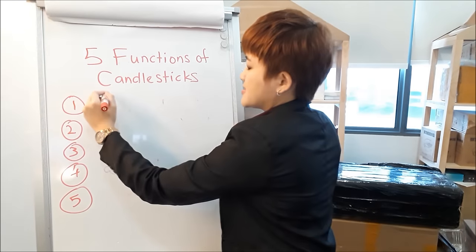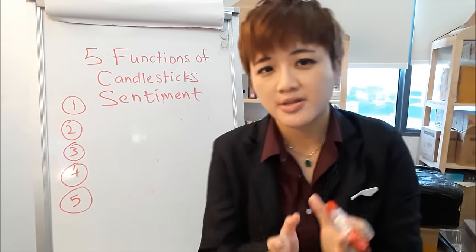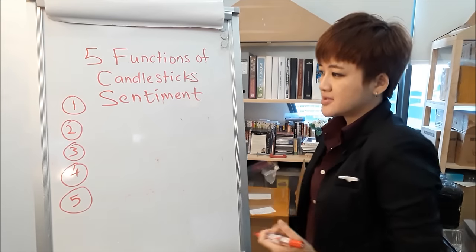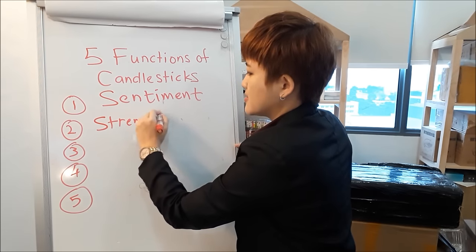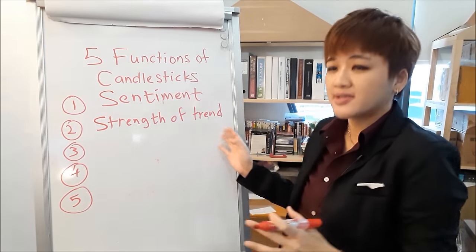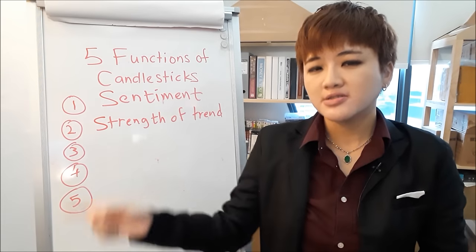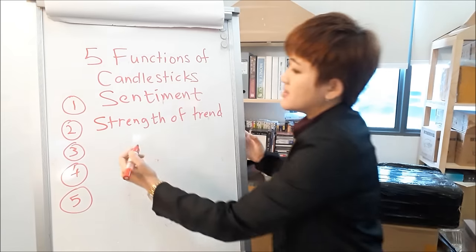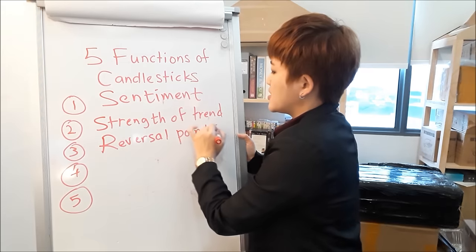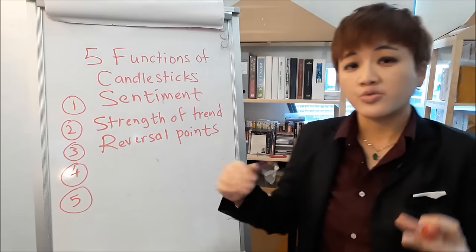The functions of candlesticks: the first function is it tells you the current sentiment in the short term, because markets in the short term are driven by fear and greed. The second function is if you see a continuation pattern in the middle of a trend, it tells you the trend is strong — so it tells you the strength of the trend and whether it's going to reverse or continue.